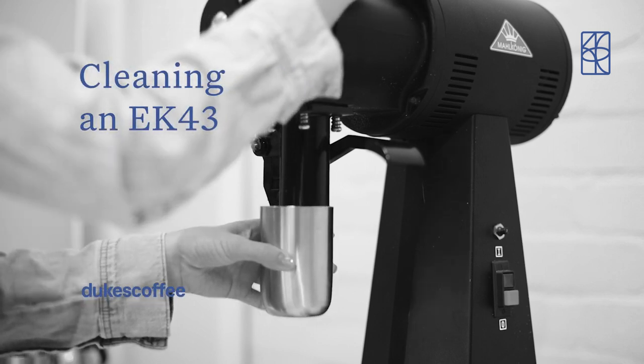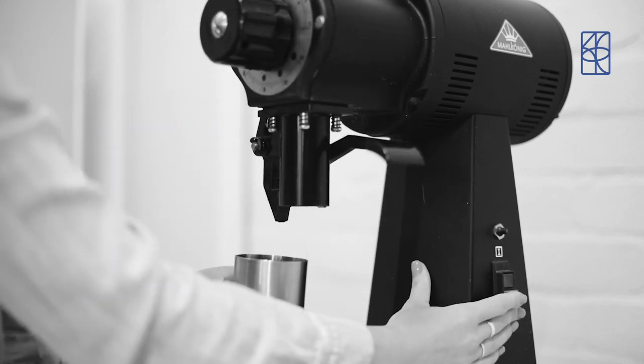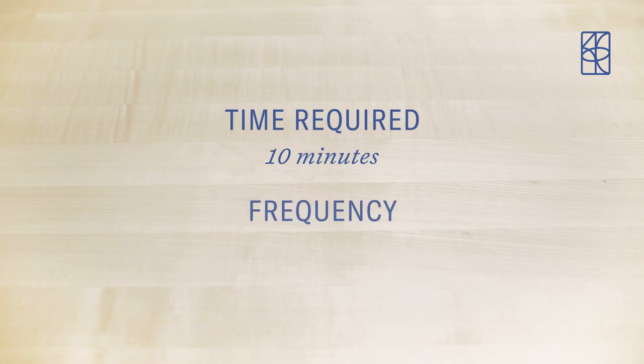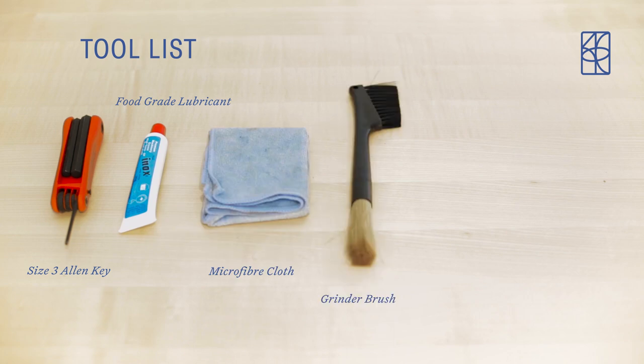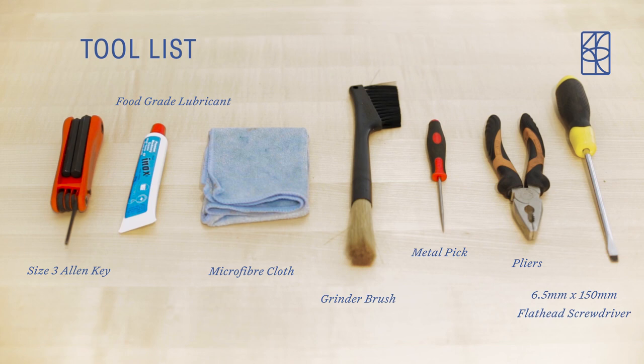Cleaning an EK43. The whole process should take 10 minutes and is required every 3-6 months. You will need a size 3 allen key, food grade lubricant, a microfiber cloth, a grinder brush, a metal pick, pliers and a right size screwdriver.